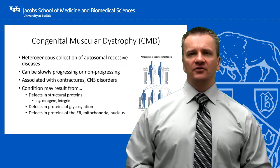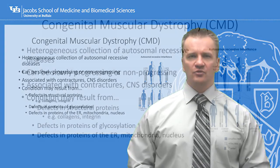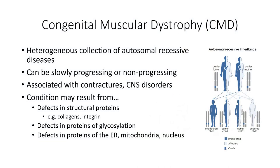The term congenital muscular dystrophy is used to describe a heterogeneous group of diseases that typically have an autosomal recessive inheritance pattern. The precise protein that is encoded is highly variable. In some instances, it can be structural proteins such as certain collagens and integrins. In other instances, the mutation involves glycosylation proteins.